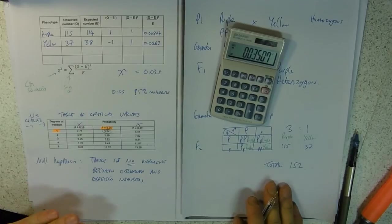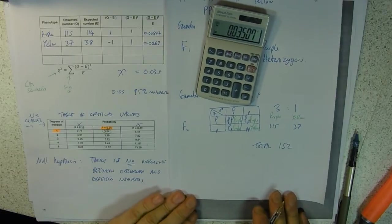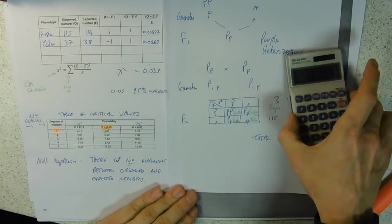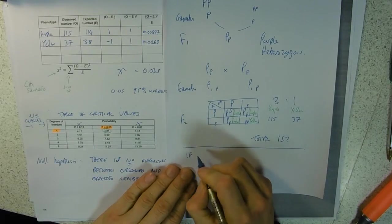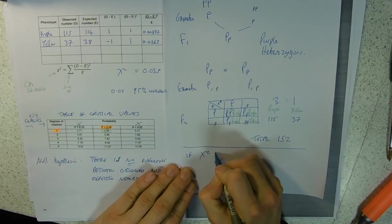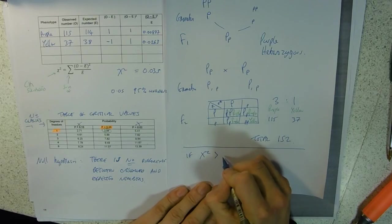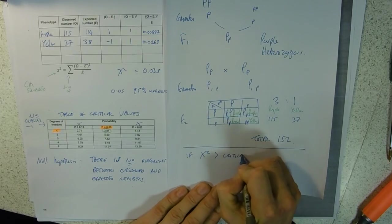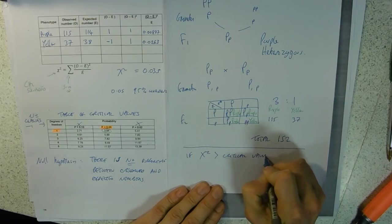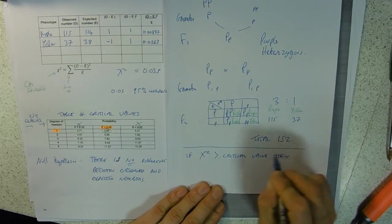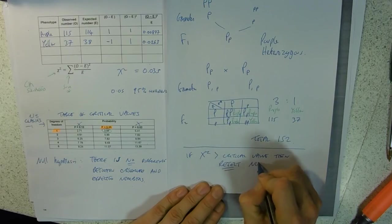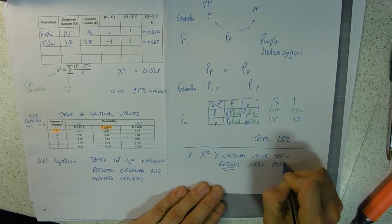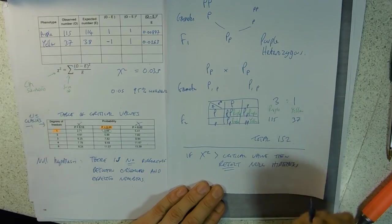The rules are: if chi-squared is greater than our critical value, then reject the null hypothesis.